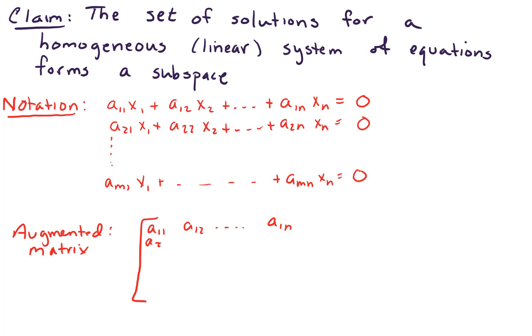The augmented matrix is of the following form. We've got our coefficient matrix, so we've got a11, a12, and so forth, all the way up through a1n. And then our first column, second row, a21, all the way down through our mth row, and on the right-hand side, we have our column of zeros.